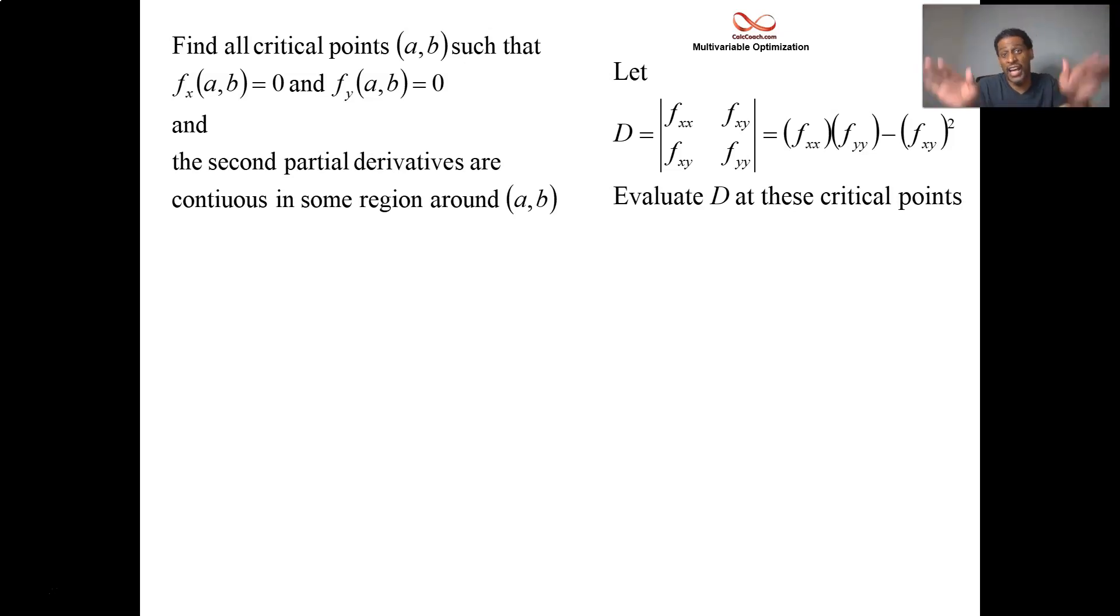The calculation is based off of the second derivatives and it has the same kind of connotations as our second derivative test did back in Calc 1. If you have a second derivative being positive, your function was concave up like a cup, so you had a min. But if your second derivative is negative, your function was concave down like a frown, so you had a max. Same thing is going to happen here. If D is positive - find your critical points and evaluate this function D based off of the second derivatives at those critical points.